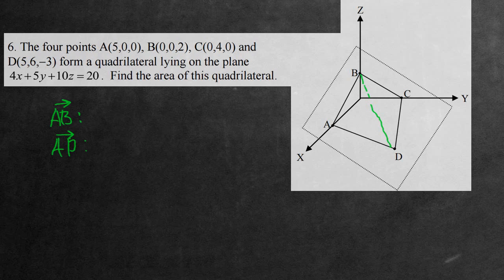So 0 subtract 5 is just negative 5, 0, 0, and this is going to be a 2 there. This is the first vector. It's 5 subtract 5, 0, we have 6 subtract nothing, it's just 6, and then we have negative 3. And these are the two vectors.